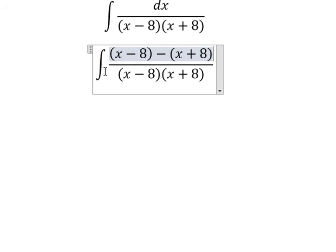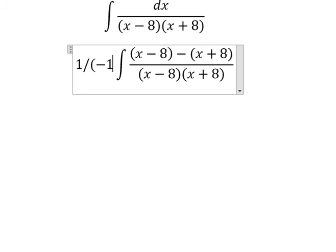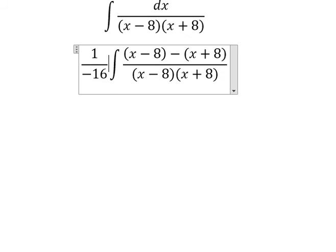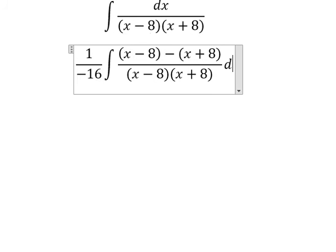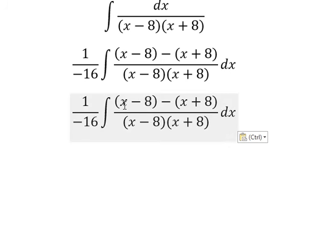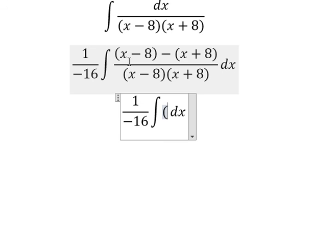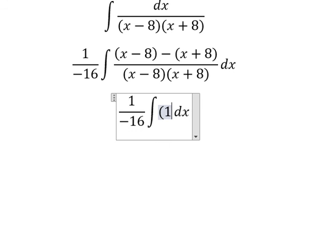So outside the integral we will have 1 over negative 16. Now we will have the answer. In here, x minus 8 divided by x minus 8 will give us 1 over x plus 8.